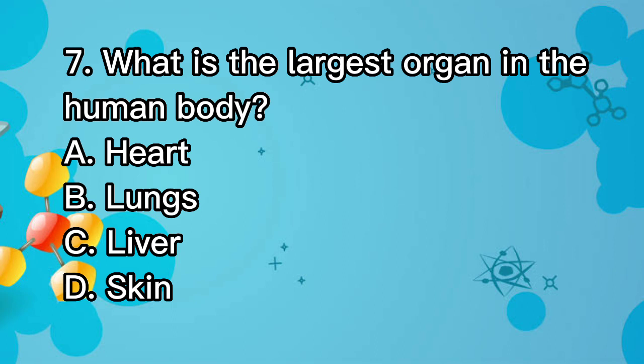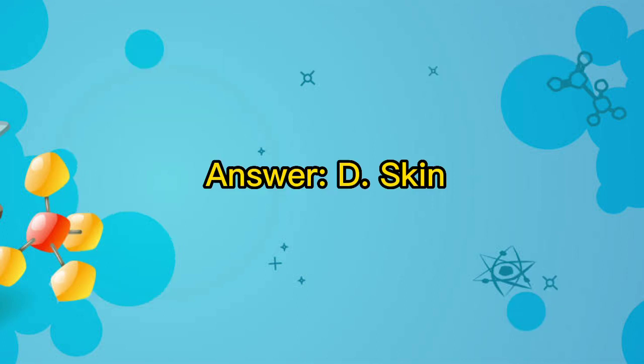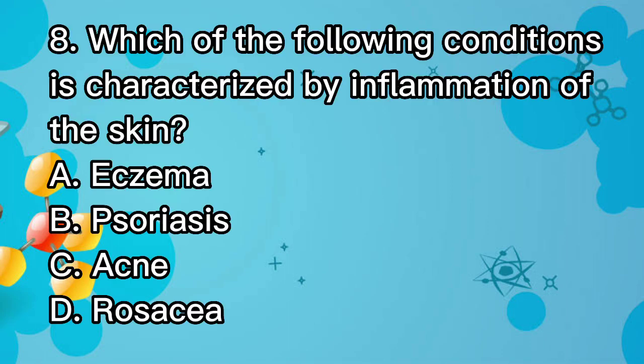Question 7. What is the largest organ in the human body? A. Heart. B. Lungs. C. Liver. D. Skin. Answer: D. Skin.